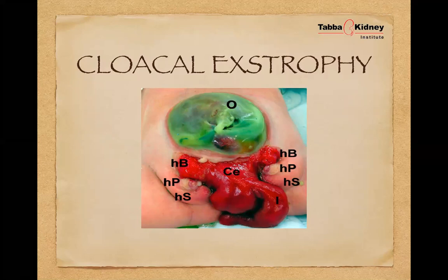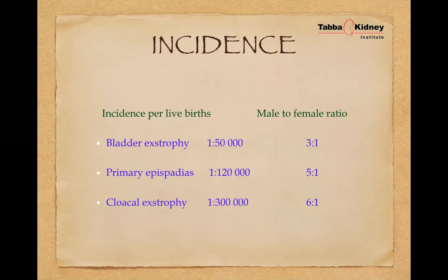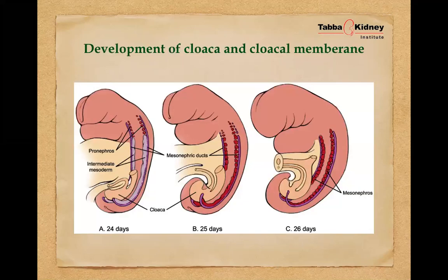Regarding epidemiology: bladder exstrophy occurs in about 1 in 50,000 live births, with a male-to-female ratio of 3:1. Primary epispadias is 1 in 120,000, with a 5:1 male-to-female ratio. Cloacal exstrophy, the most severe form, occurs in about 1 in 400,000, with the fewest numbers.